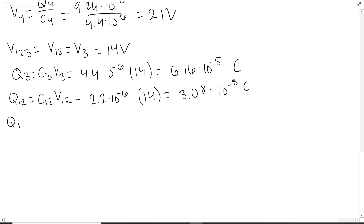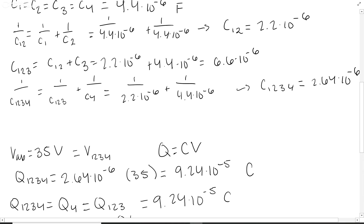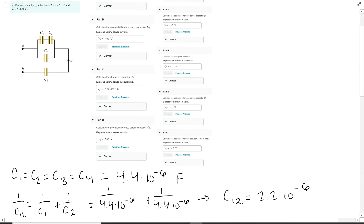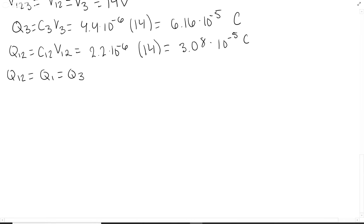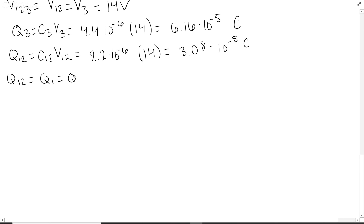Since C1 and C2 are in series, charge is equal across series elements. So Q1,2 equals Q1, which equals Q2, and they equal their combined value — once again 3.08 times 10 to the negative 5 coulombs.